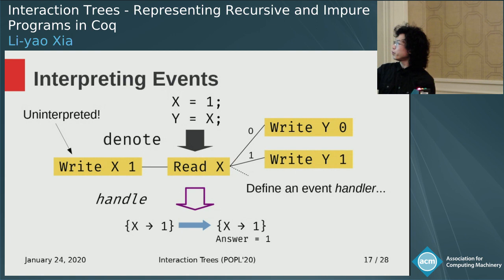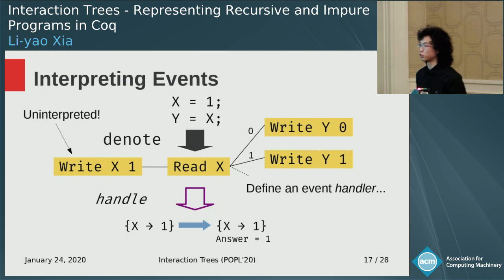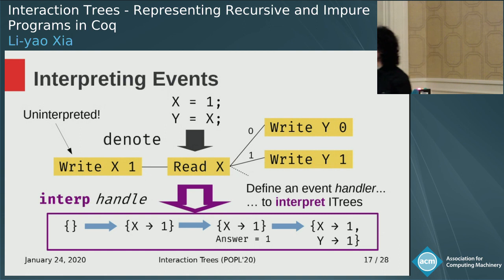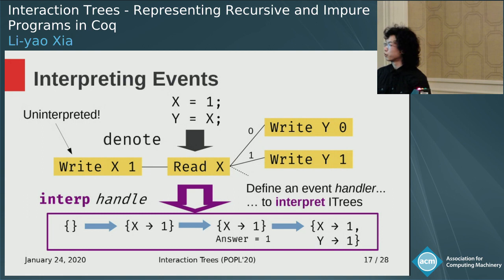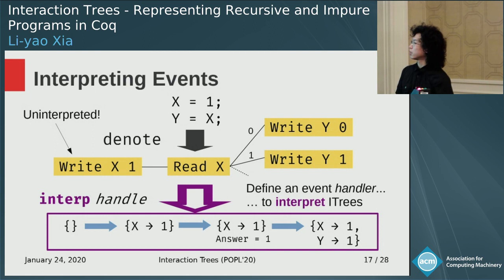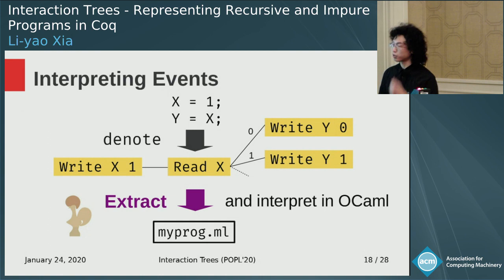For that, you need to provide a handler that says how to interpret the events further. For example, a read event can be interpreted into some state — it doesn't change the state, x is still mapped to 1, but you get an answer of 1 that you can pass to the rest of the computation. Given such a handler, you can lift it using the interp function to construct an interpreter for whole interaction trees that threads the state along the tree. The handler is what you write as a language designer — you can have many different kinds of handlers, giving you all kinds of interpreters. You can also extract them as a co-inductive data type and interpret them in OCaml, for example to make it talk on the network to implement a web server.